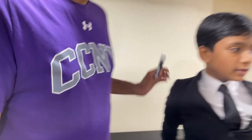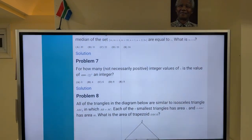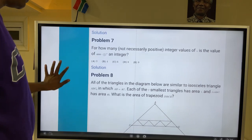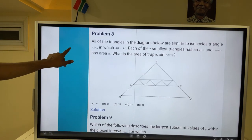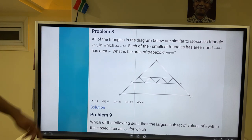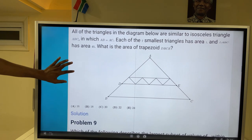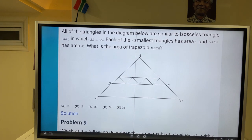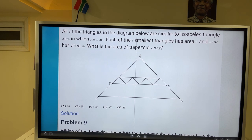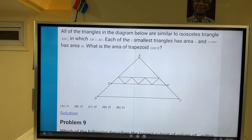Okay, which one are we gonna do? Ten? Yeah, let's start with eight. You wanna start with eight? Sure. Okay, I'll read it. All of the triangles in the diagram below are similar to isosceles triangle ABC where AB is equal to AC. Each of the seven smallest triangles has area 1 and triangle ABC has area 40. What is the area of trapezoid DBCE?